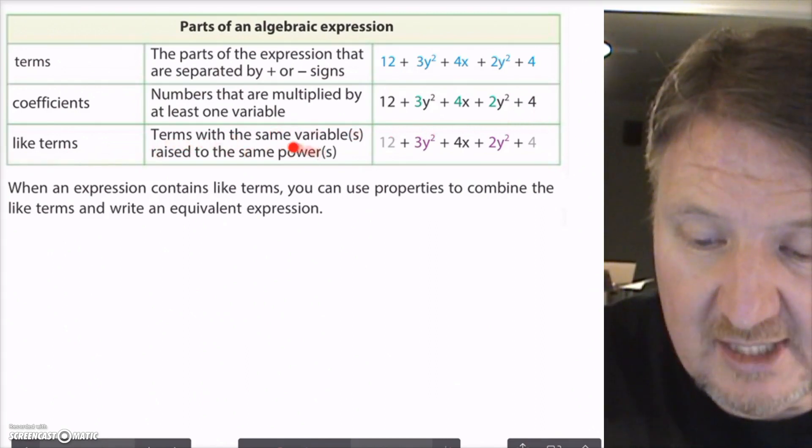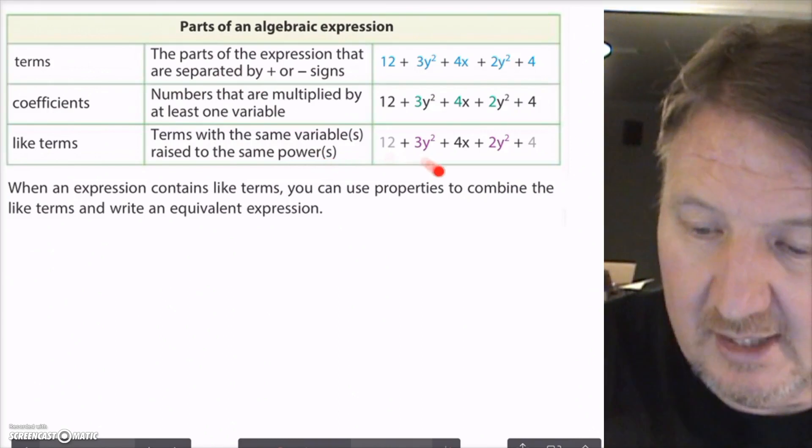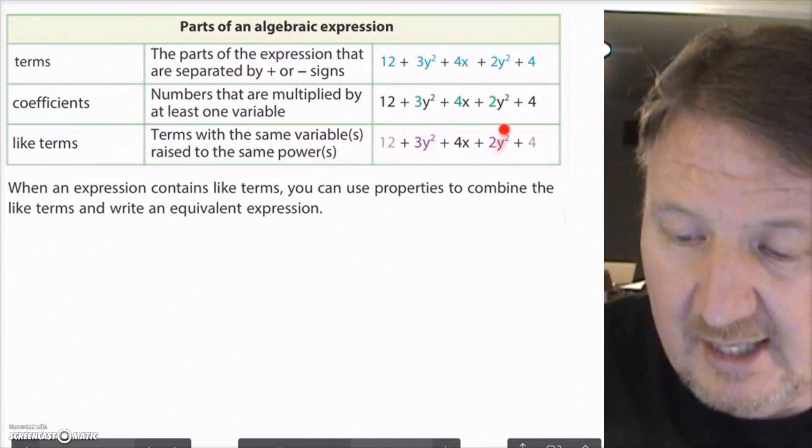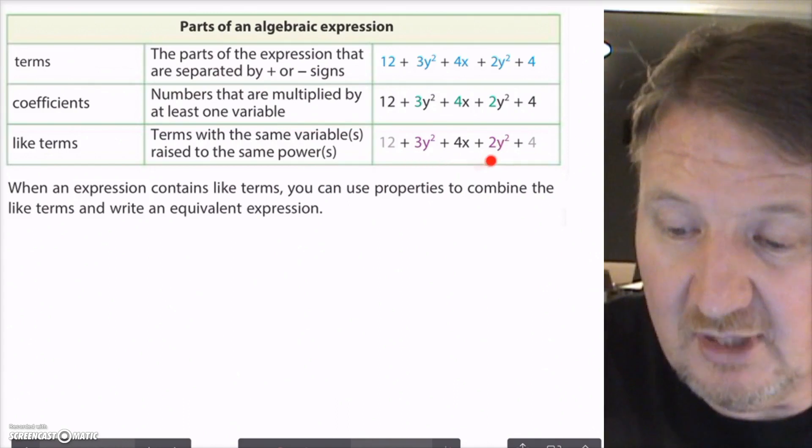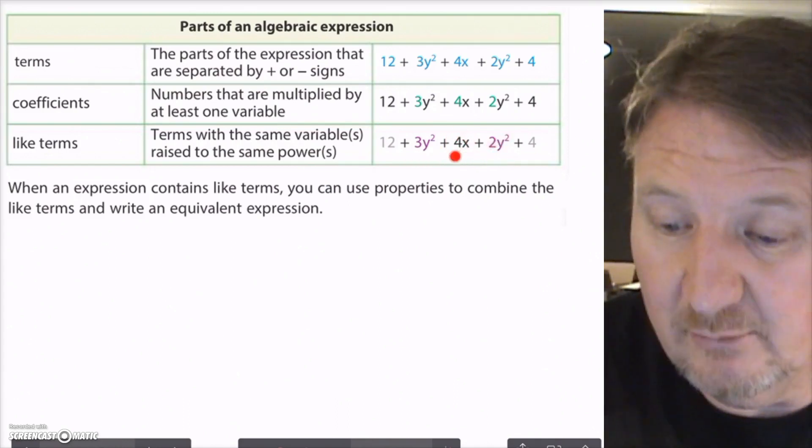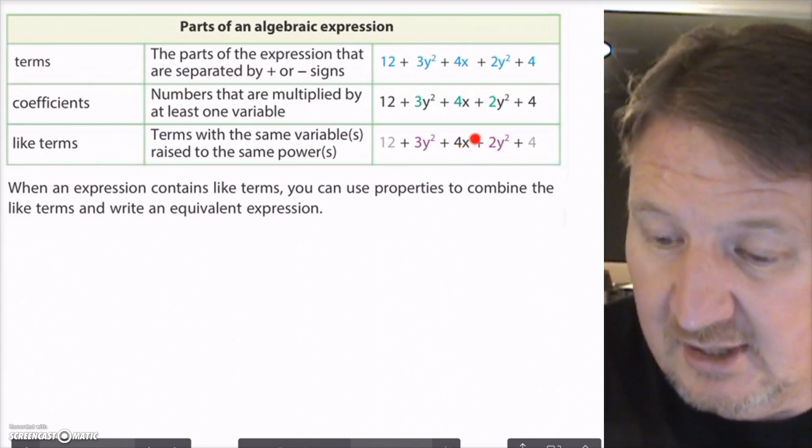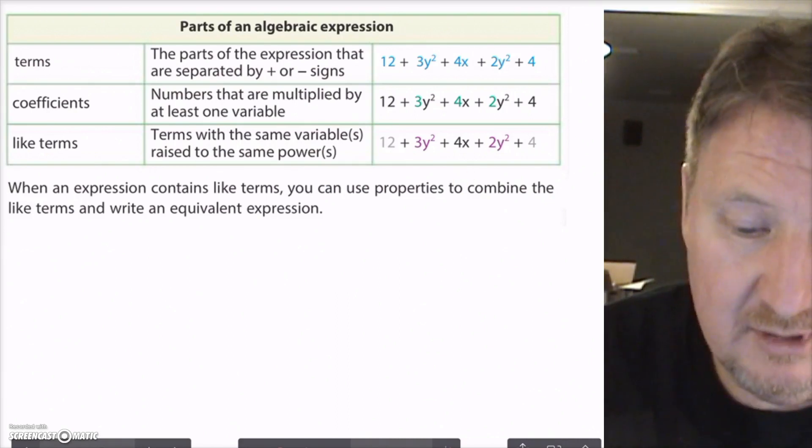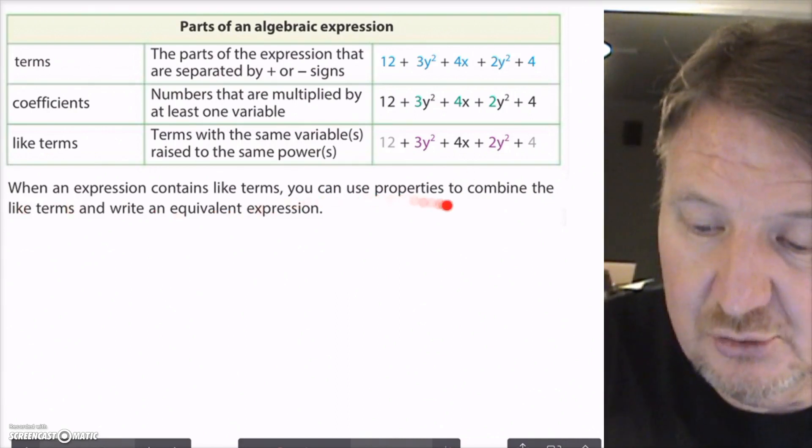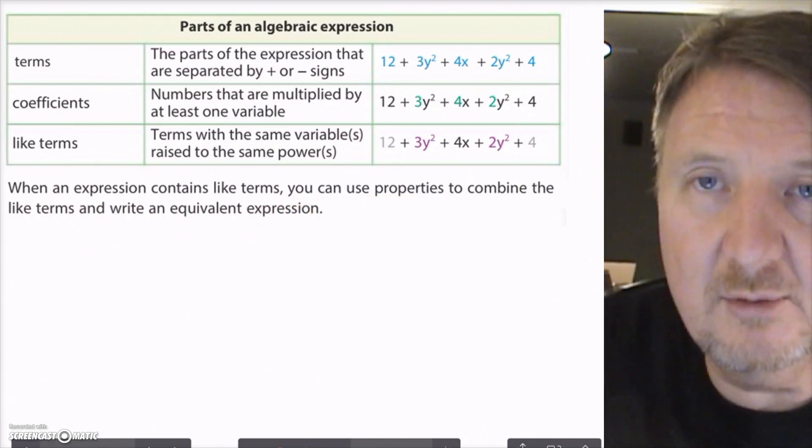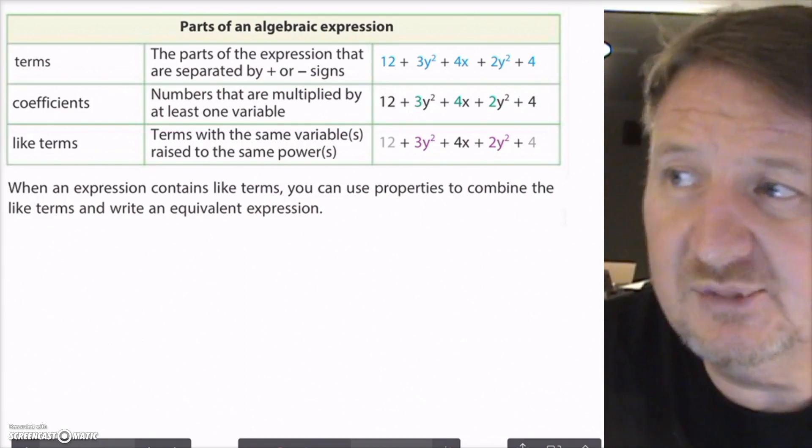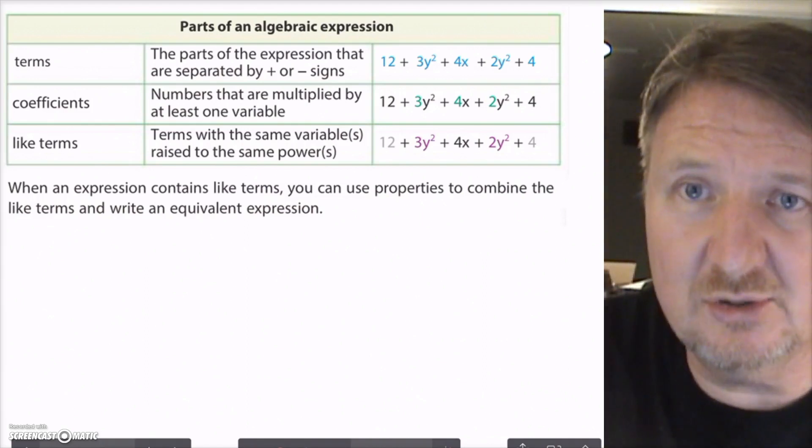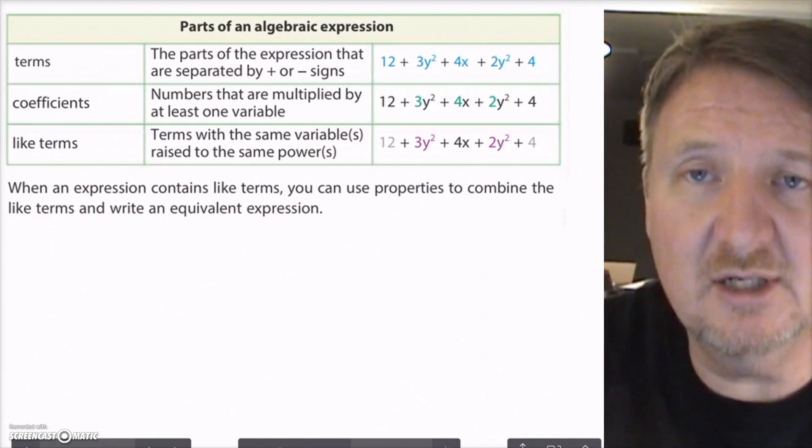And then like terms are terms that have the same variable raised to the same power. So here I have 3y squared and I have 2y squared. They have their coefficients, but they have the same variable raised to the same power. So they're like terms. Notice the 4x isn't included in that because it's an x and these are y's. But it's not raised to a power at all. So it says when an expression contains like terms, you can use properties to combine the like terms and write equivalent expressions. And that's really what we're boiling them down to. We're trying to get, like if you have a big, huge expression that you're trying to simplify and get it down into a smaller one that you can actually start to try to solve, you can use these properties that we just talked about and this information here and you can do that with it.